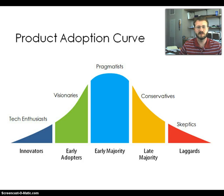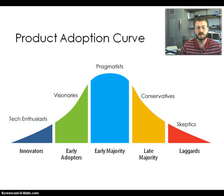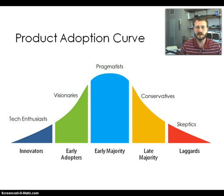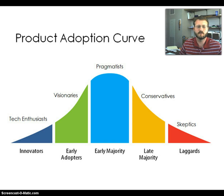Hi there, Thomas Heffy here. I want to take a quick look at something from chapter 11 — the product adoption curve, the diffusion curve — lots of different names for it. I know we already have it in the slides; this is the same image you're used to seeing in the slides for chapter 11. We've already got some good notes in there, but I want to touch on it just a little bit deeper.